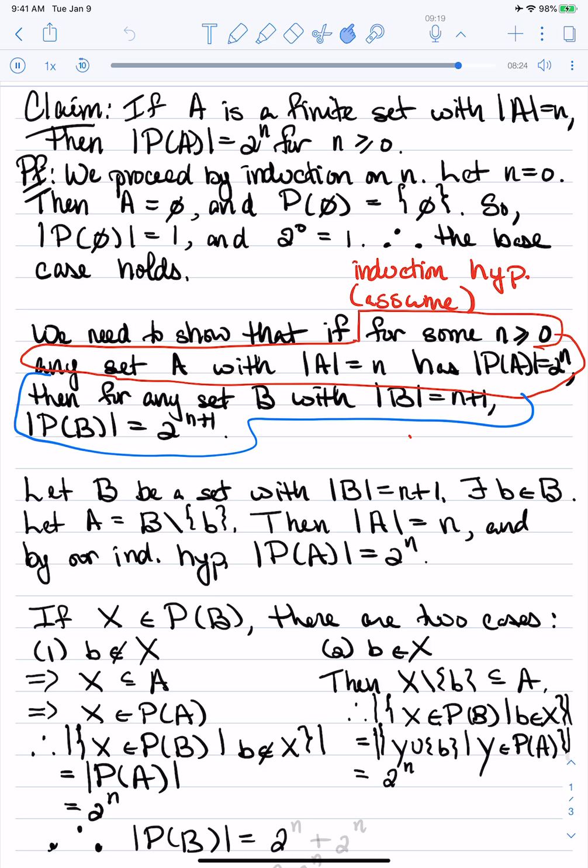Therefore, the cardinality of the power set of B is equal to the sum of these two cardinalities because there's no overlap between the two cases. Therefore, what we see is that the cardinality of B has size 2 to the n plus 1 as we claimed.